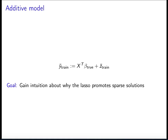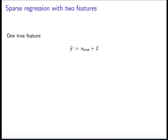We're going to analyze an additive model where there's a true vector of coefficients, a fixed feature matrix, and some additive random noise — that is what yields the response. This is exactly the same model we analyzed for OLS, ridge regression, and regularization via early stopping. Here we're going to incorporate some new assumptions to gain intuition about why the lasso promotes sparse solutions. In particular, we're going to consider a super simple model where there's just one true feature, and that true feature is corrupted by some additive noise, and that's what gives you the response.